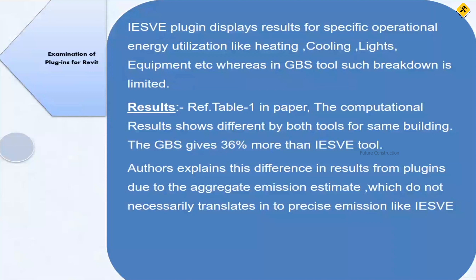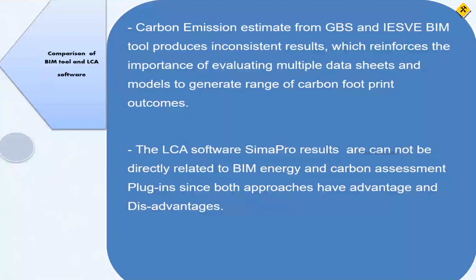A study comparing both plugins found a significant discrepancy: GBS gave results 36 percent higher than IESVE for the same building. This difference is attributed to GBS using aggregate emission estimates based on assumed standards, rather than the precision input-specific calculations that IESVE performs. The research reinforces the importance of evaluating multiple data sources and models to generate a range of carbon footprint outcomes, rather than relying on a single tool.